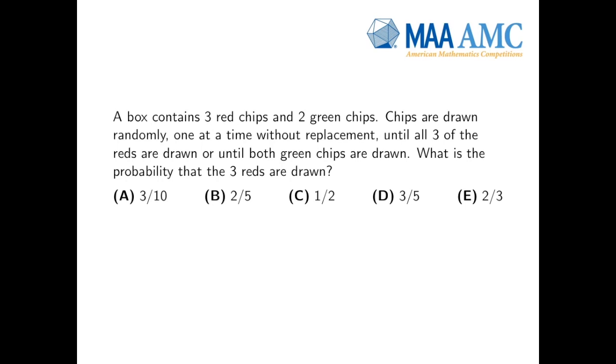A box contains three red chips and two green chips. Chips are drawn randomly, one at a time without replacement, until all three of the reds are drawn or until both green chips are drawn. What is the probability that the three reds are drawn?